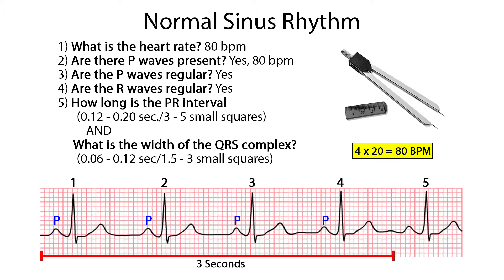Step 3: Are the P waves regular? Measure from the beginning of one P wave to the beginning of the next with calipers or paper. In this case, the P waves do measure out to be regular distances apart. Step 4: Are the R waves regular? The R waves also measure out to equal or almost equal distances apart. There might be a slight variation in length, and that is okay — we have to allow for some fluctuation in heart rate.